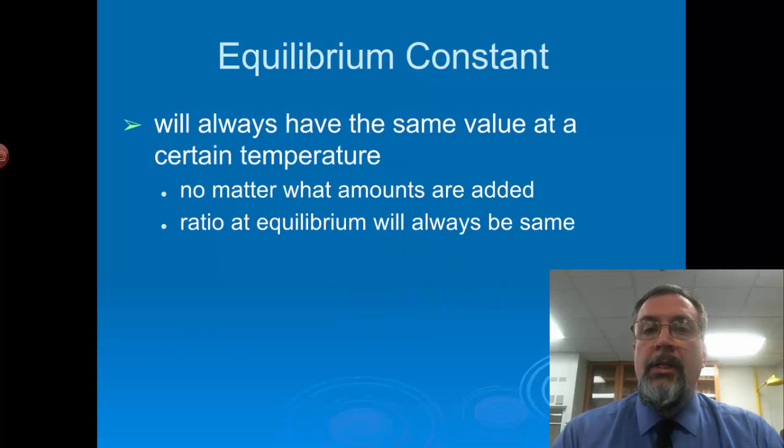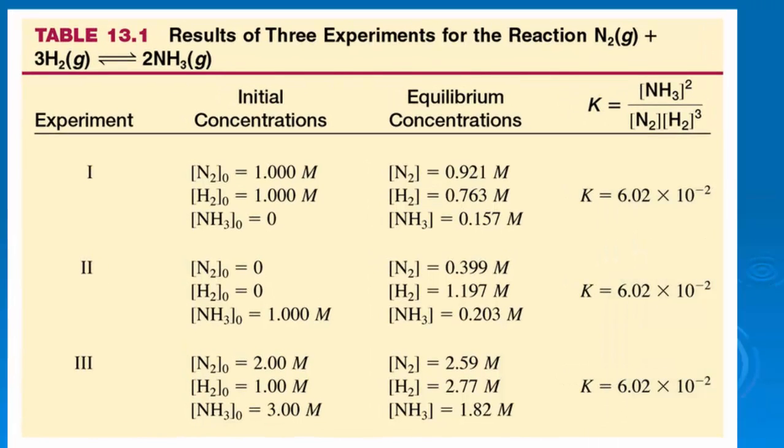The equilibrium constant always has the same value at a certain temperature. It doesn't matter how much stuff you start with, it doesn't matter the initial concentrations. The ratio of the concentrations of products to concentration of reactants at equilibrium will always be the same, as long as you don't change the temperature. We will see why temperature is a factor a little bit later on in our study. Here's an example of three different experiments run for the same reaction where we have nitrogen and hydrogen gases forming ammonia. This is right out of your book.